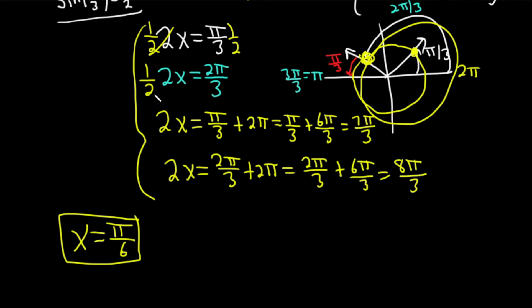Same thing here. 2x is 2π over 3. You can multiply by 1 half. These cancel. So you get x. The 2's cancel. You get x equals π over 3. Who would have thunk, right? Who would have thunk? I don't think thunk is a word. I just wanted to use it because it's a fun word.